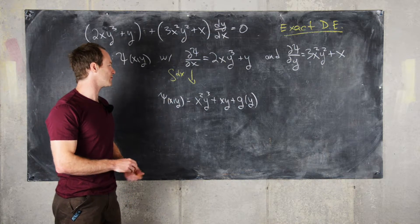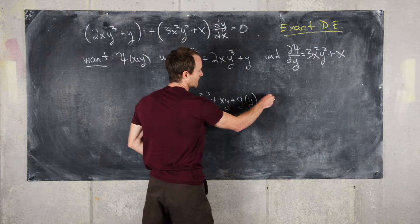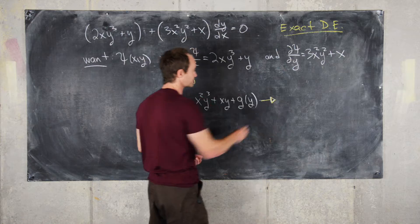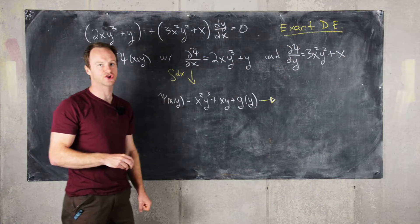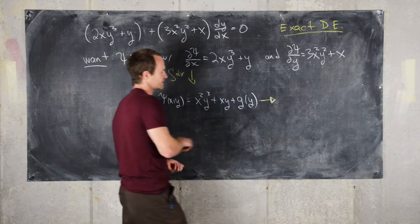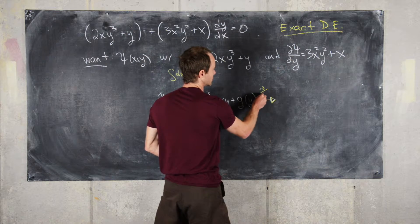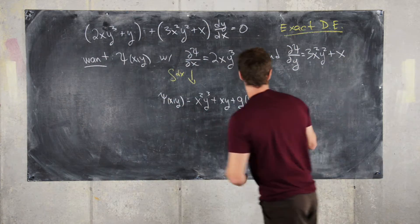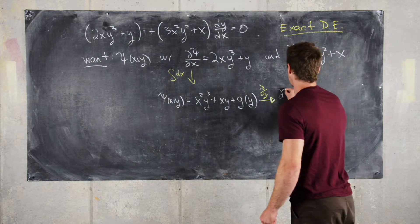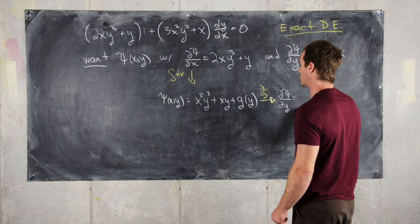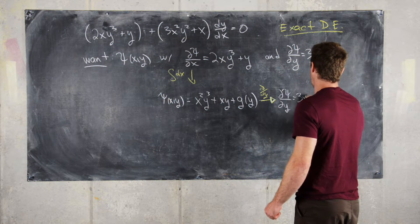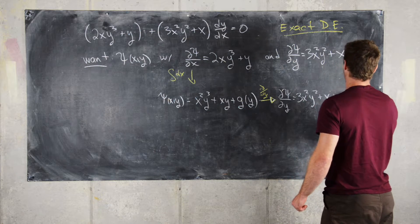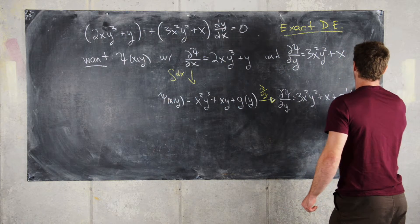Next, we take the partial of psi with respect to y and compare it to what we know it should be. The partial of psi with respect to y gives us 3x²y² plus x plus g′(y), and this should equal 3x²y² plus x.